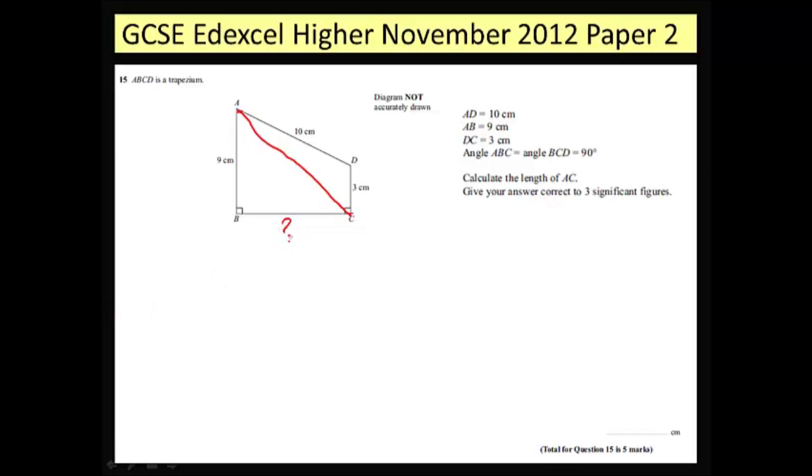First thing I'm going to need to work out is the length BC. A couple of things I can notice here. I can notice that this length across here creates a second right angle triangle and this length from D to this point here would be the same as BC.